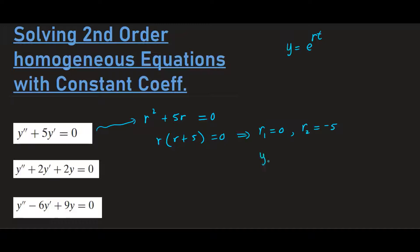So the solution is going to be y equals c1 e to the zero t plus c2 e to the negative five t. And of course this we can rewrite because you don't want to write zero t.